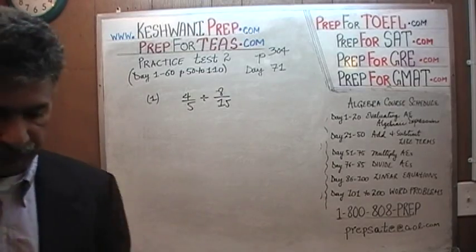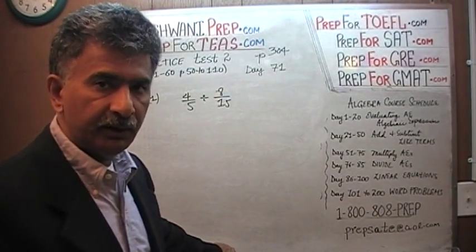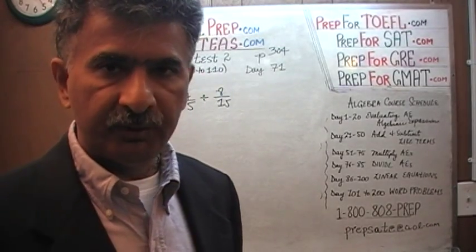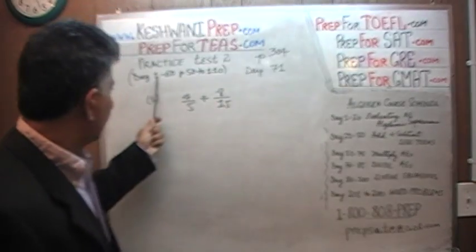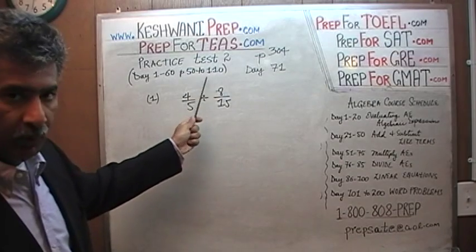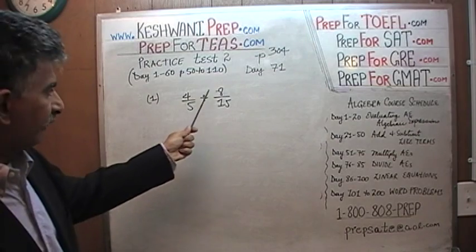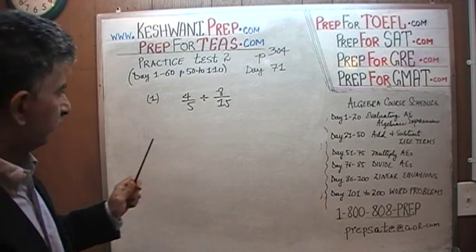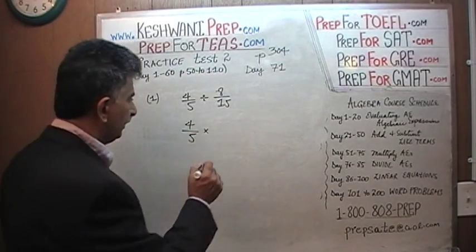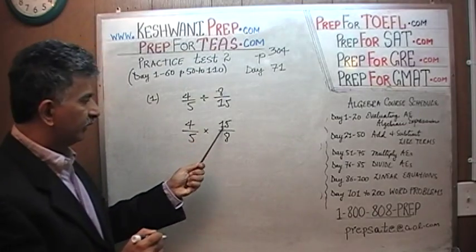Now as we already learned, all of these concepts that we are going to encounter in these exams — in the first exam that we already did and in the exam that we are doing right now — are all the concepts we already covered on day 1 through 60, when we did the practice questions on page 50 through 110. During that time, we learned that when we have one fraction and we are being asked to divide it by another fraction, what we do is take the first fraction and multiply it by the reciprocal of the other fraction. So 8 over 15 becomes 15 over 8.